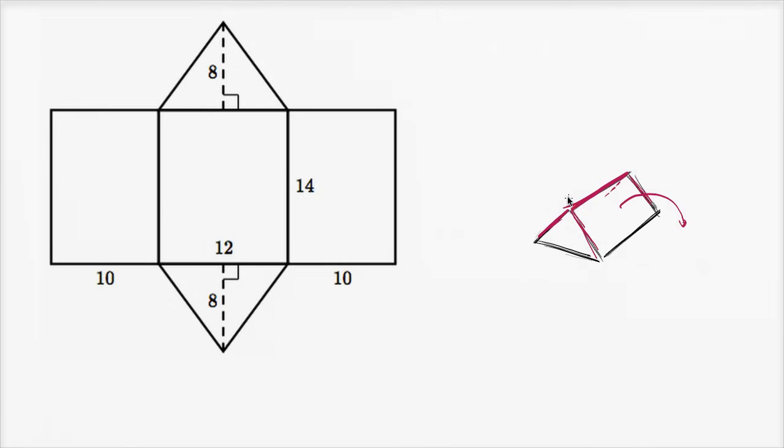So if you were to open it up, it would open up into something like this, and when you open it up, it's much easier to figure out the surface area. When we open it up, we can just figure out the surface area of each of these regions.